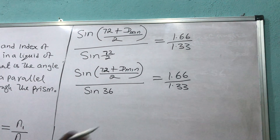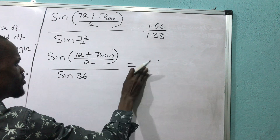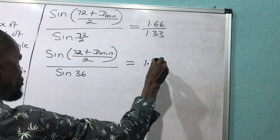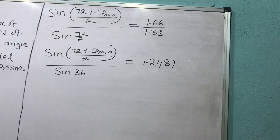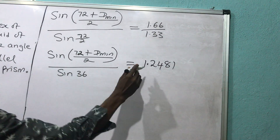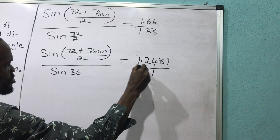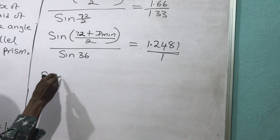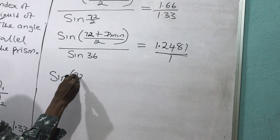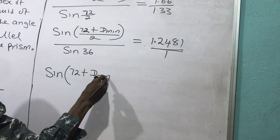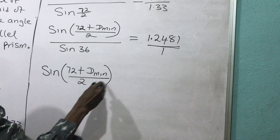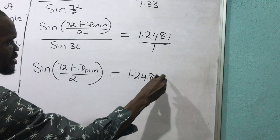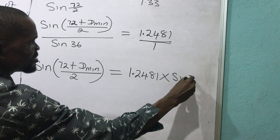When we divide 1.66 by 1.33 with the calculator, you will have 1.2481. Then by cross multiplication — this is over 1 — I will have that sine of 72 plus minimum deviation all over 2, gives me 1.2481 times sine of 36.